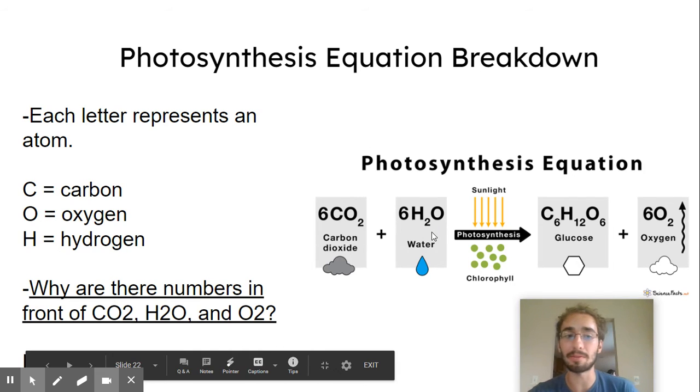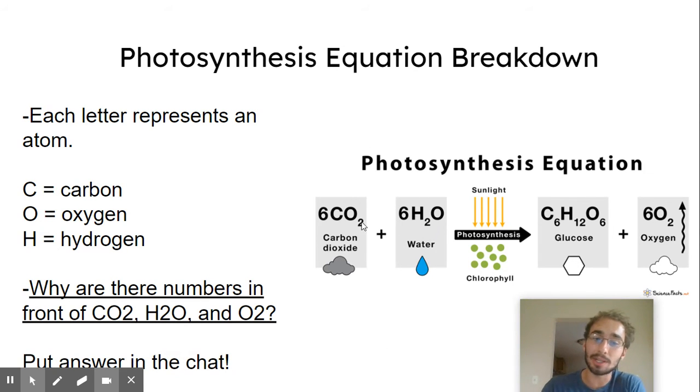So in your notes, you should have a fill in the blank. Each letter in the equation represents an atom. So C is carbon, O is oxygen, H is hydrogen. And then I want you to pause the video and think, why do you think there are numbers in front of CO2 and H2O and O2? Why do you think there are numbers?